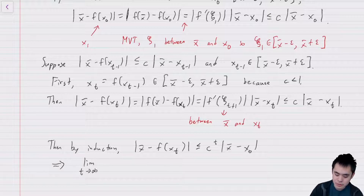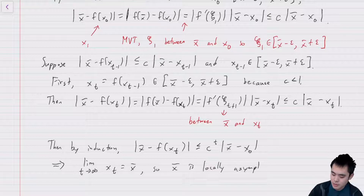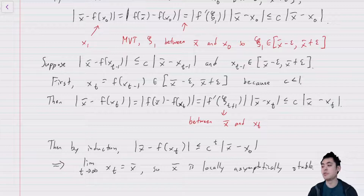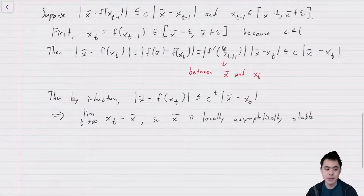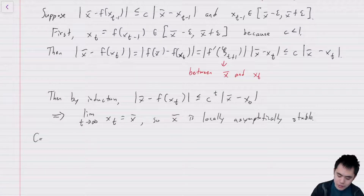Because c < 1, this implies that the limit as t goes to infinity of x_t equals x-bar. So x-bar is locally asymptotically stable — if you start close enough to your equilibrium, you will converge to it as t → ∞.